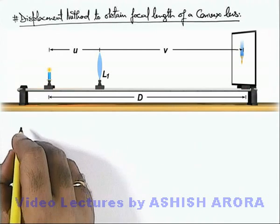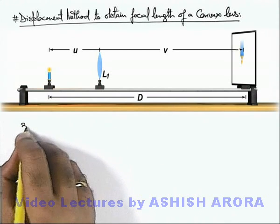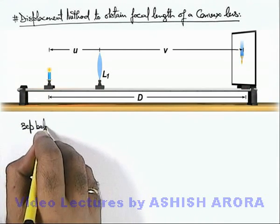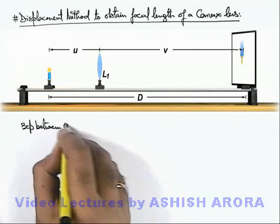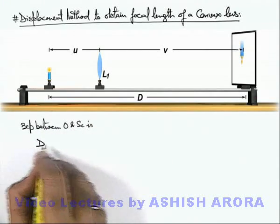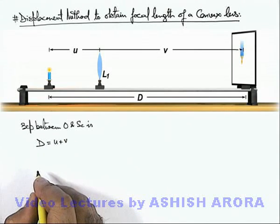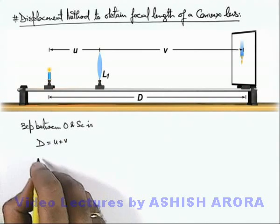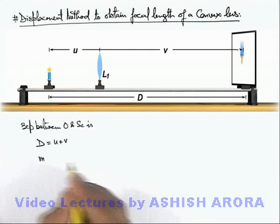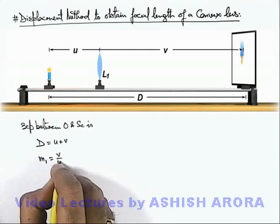Then here we can directly write the separation between object and screen is D, we can directly write as u plus v. And in this situation, the magnification produced for the image m1 is given as v by u.